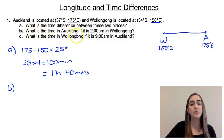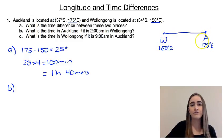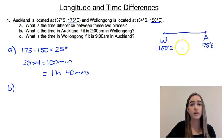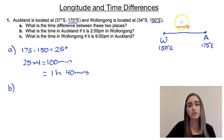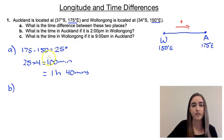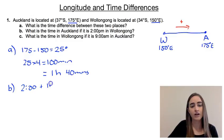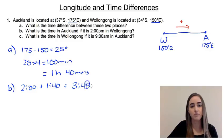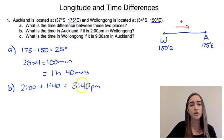Part B asks: what is the time in Auckland if it's 2pm in Wollongong? Auckland gets the day first, so by the time it's 2pm in Wollongong, it's actually later in Auckland. Going from Wollongong time to Auckland time, we add that one hour and 40 minutes. So 2pm plus one hour and 40 minutes gives us 3:40pm.